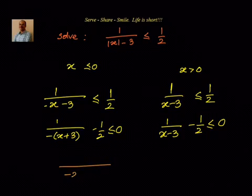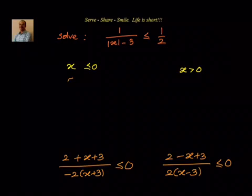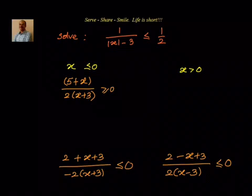Taking the LCM for both cases: for x less than 0, we get (minus 2(x+3) + (x+3)) over (2(x+3)), which simplifies to (5 + x) divided by (minus 2(x+3)) less than or equal to 0, or equivalently (5+x) divided by 2(x+3) greater than or equal to 0. For x greater than 0, we get (5 minus x) divided by 2(x minus 3) less than or equal to 0.